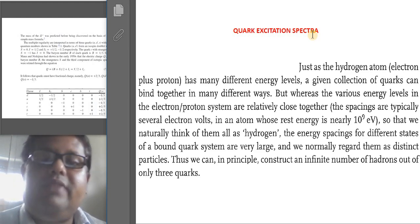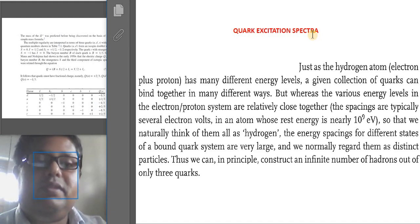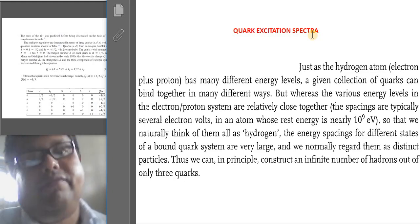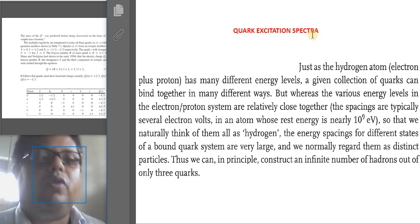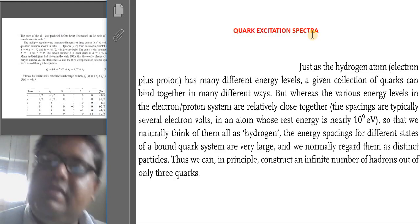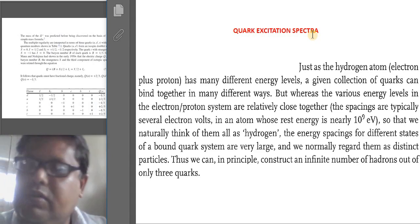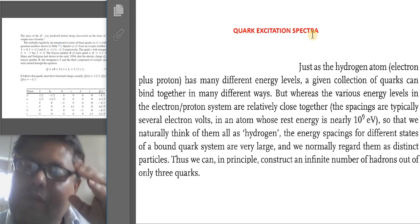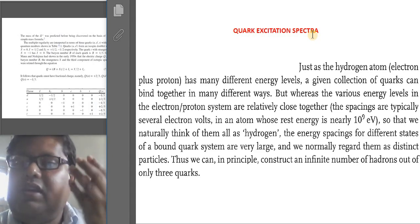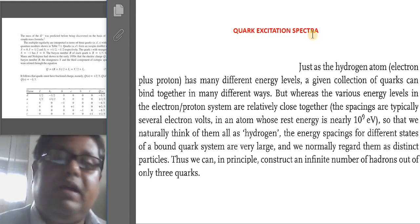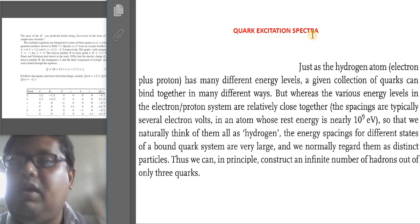So that we naturally think of them all as hydrogen. The energy spacings for different states of a bound quark system, on the other hand, are very large, and we normally regard them as distinct particles. This is the very basic difference between these two ways of treating particles. Thus, we can in principle construct an infinite number of hadrons out of only three quarks.